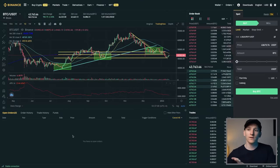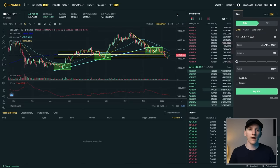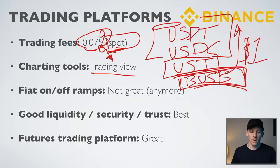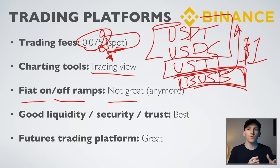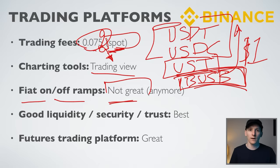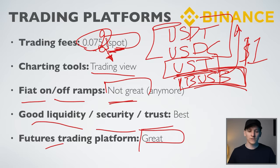Binance uses TradingView — you can see it in the bottom left of their screen. TradingView is the gold standard of retail trading charting software, with absolutely everything you need: all the different indicators and more. Fiat on and off ramps are not as great as they used to be — you can still do it but have to jump through some hoops, which is just where crypto is right now. The liquidity is amazing, security is very good, and they are the biggest crypto exchange in the world for a reason.